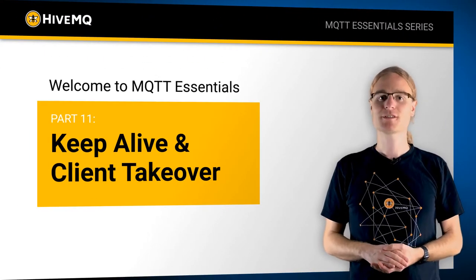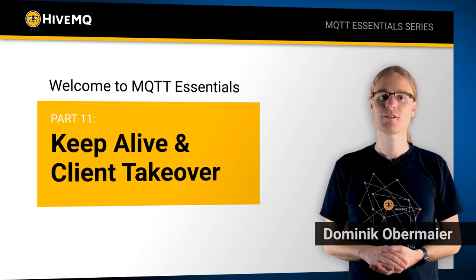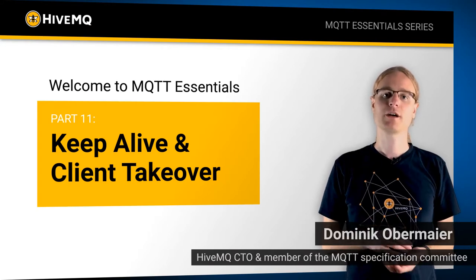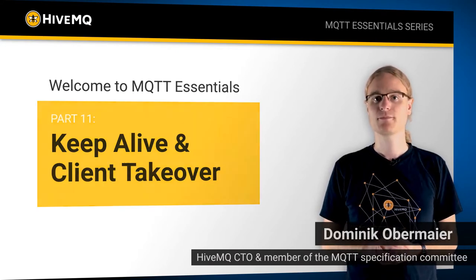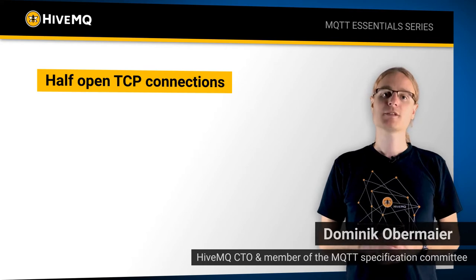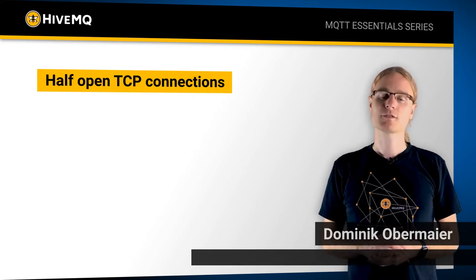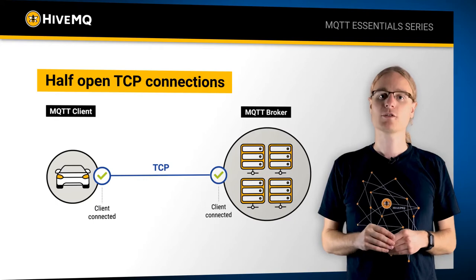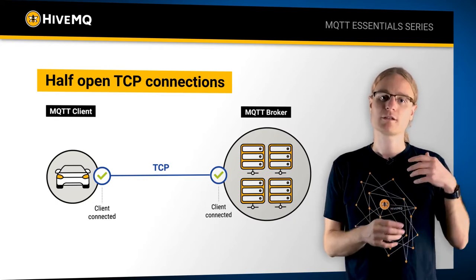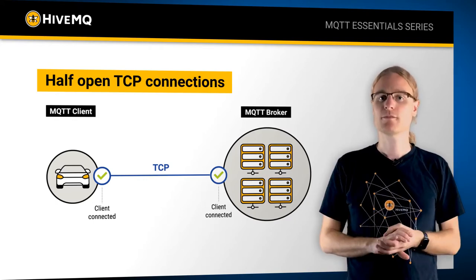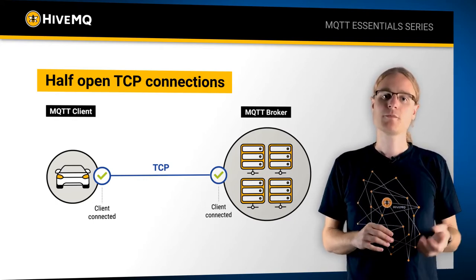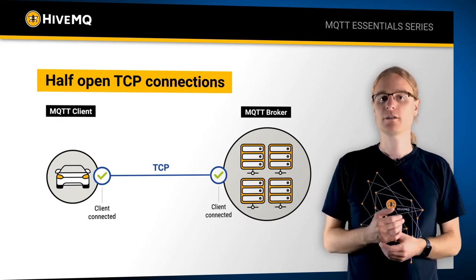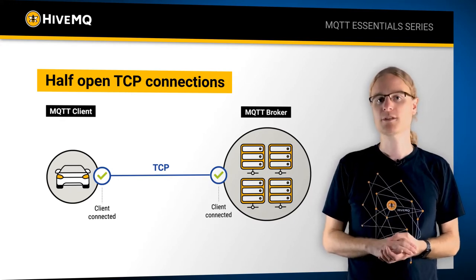Welcome back to the MQTT Essentials series. Today we are going to cover Keep Alive and Client Takeover. As we have seen in the last videos, MQTT requires TCP in order to connect a client and a broker together. There might be a problem though in some scenarios, and this problem is called half open TCP connections.